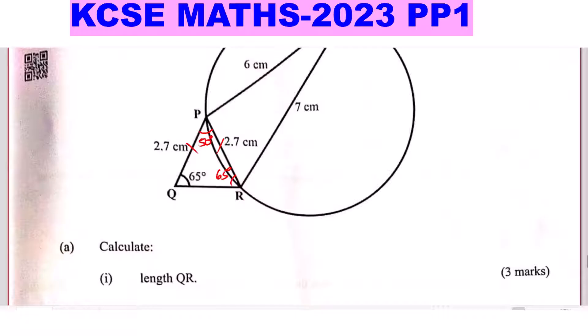Having two given sides and an angle, we can use the Sine rule to find QR. Using the Sine rule — if the side opposite P is denoted by small p, the side opposite R by small r, and the side opposite Q by small q — this is the Sine rule.